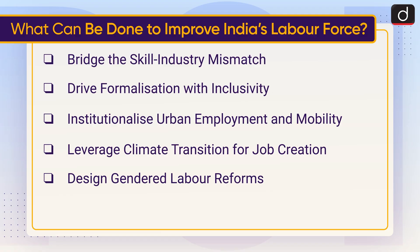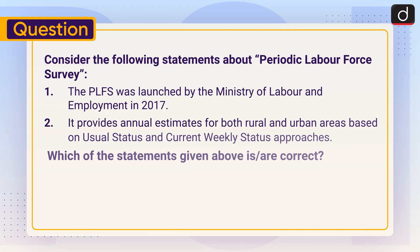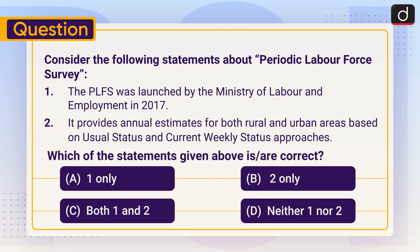Now for a practice question. Consider the following statements about Periodic Labour Force Survey. Statement 1: The PLFS was launched by the Ministry of Labour and Employment in 2017. Statement 2: It provides annual estimates for both rural and urban areas based on usual status and current weekly status approaches. Which of the statements given above is or are correct? A. One only, B. Two only, C. Both one and two, D. Neither one nor two. Send your answer in the comment section.